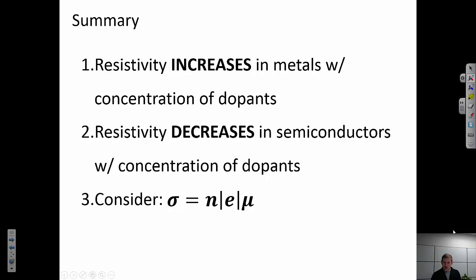In summary, the resistivity is going to increase in metals with the concentration of dopants. And that's because those dopants are scattering the free carriers and is decreasing the overall mobility, which decreases the conductivity, increases the resistivity.